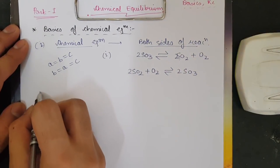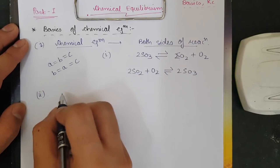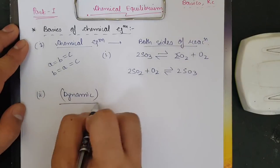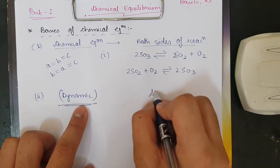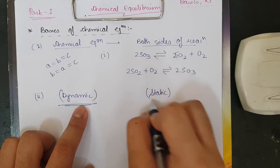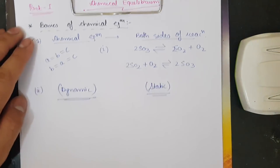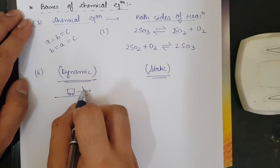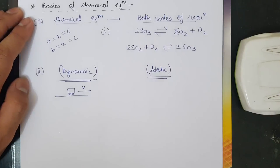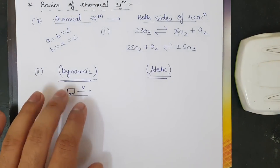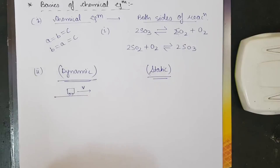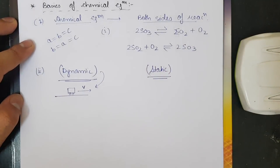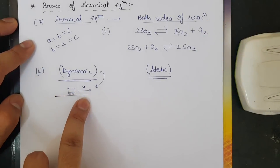The second important point is that chemical equilibrium is dynamic in nature. To understand the difference between dynamic and static, consider the example of a train moving on tracks at constant velocity V, so acceleration equals zero. The train moves smoothly at any point in time — this is dynamic equilibrium.